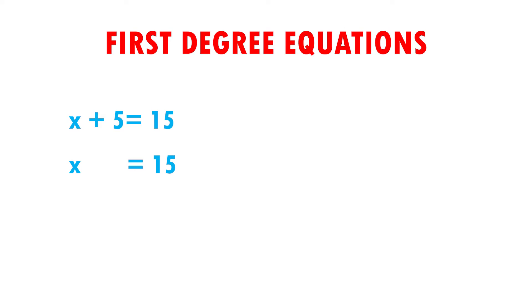This plus 5 is adding, so it passes to the other side of the equal sign doing the opposite of adding, which is subtracting. Therefore, it remains as negative 5. When doing the operation, we have that x is equal to 10.